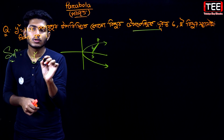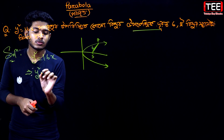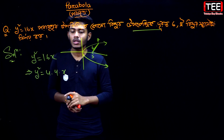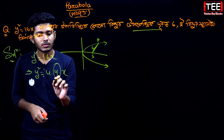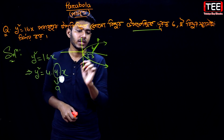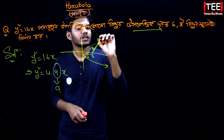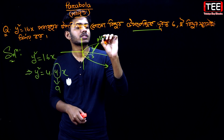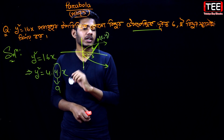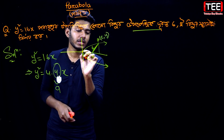y² is equal to 16x, so we will write y² is equal to 4 into 4 into x. From this we know that a equals 4.